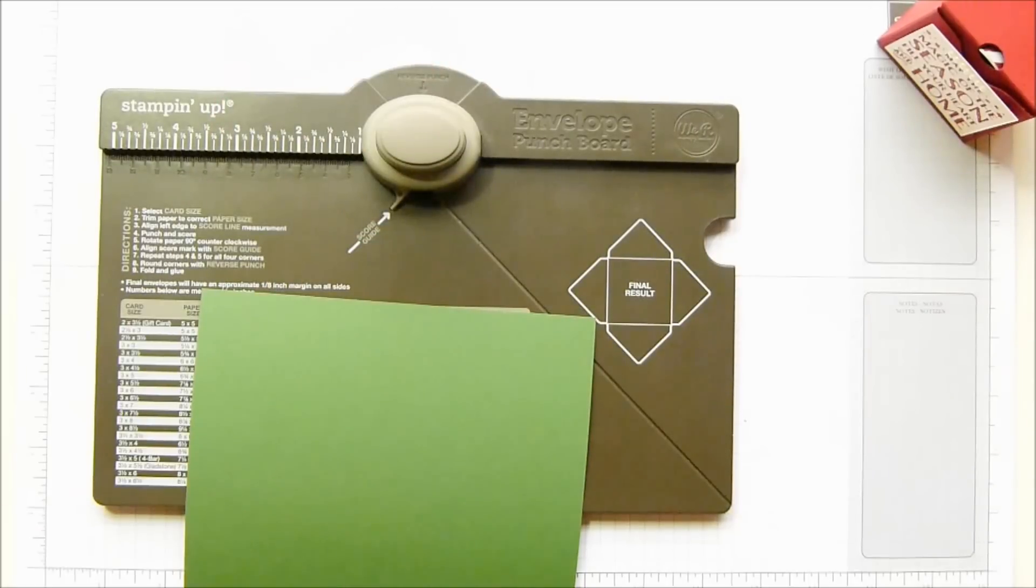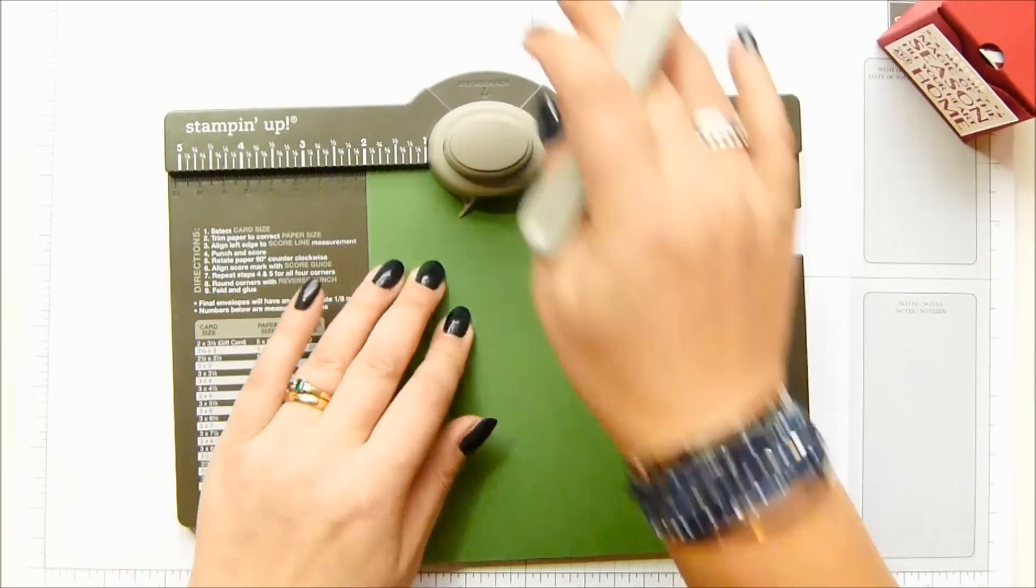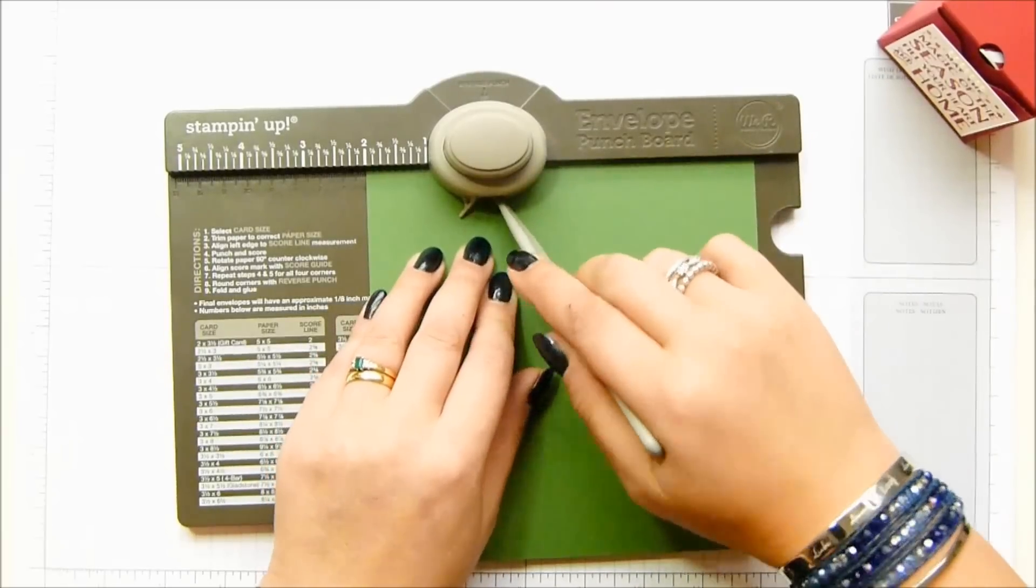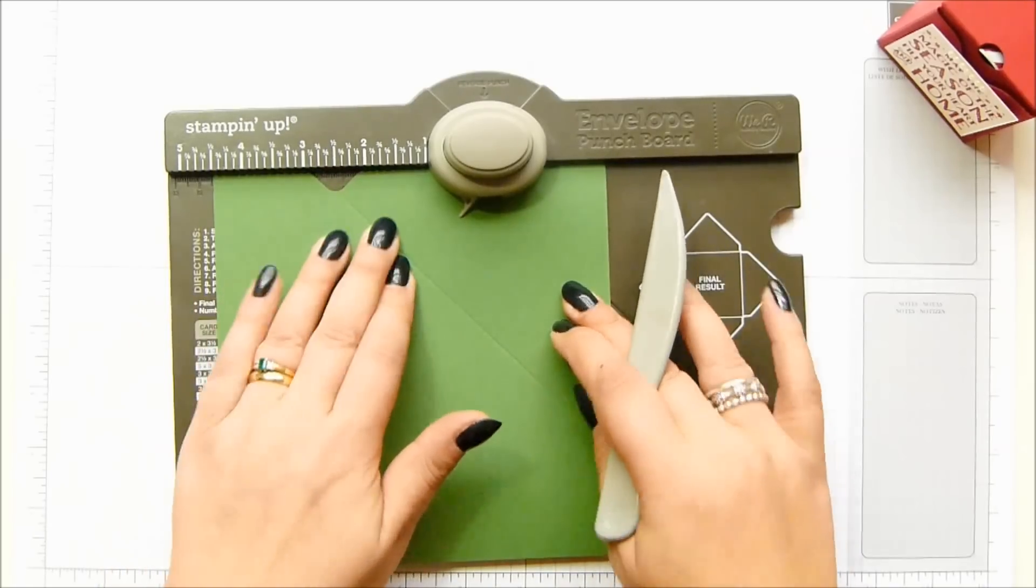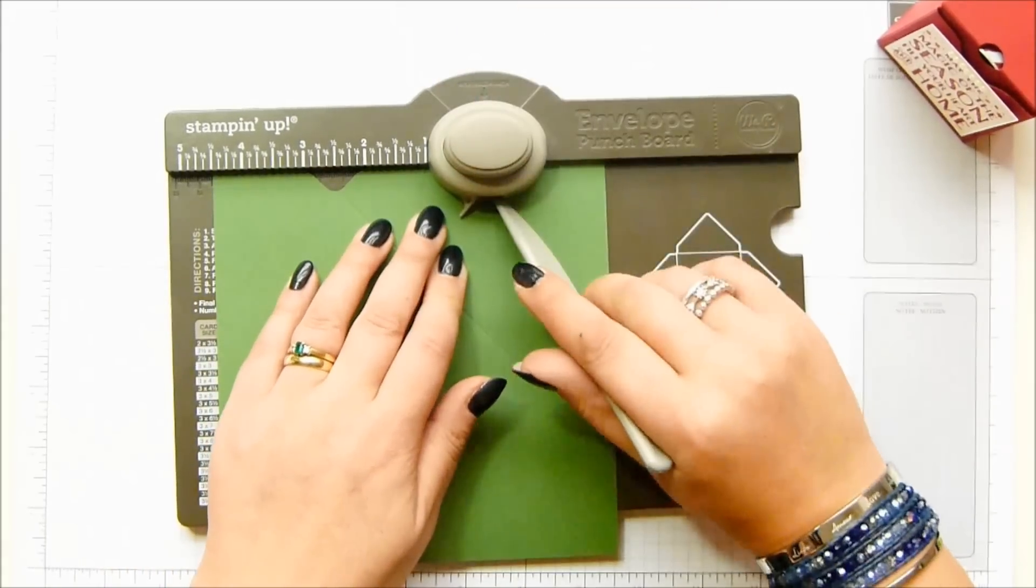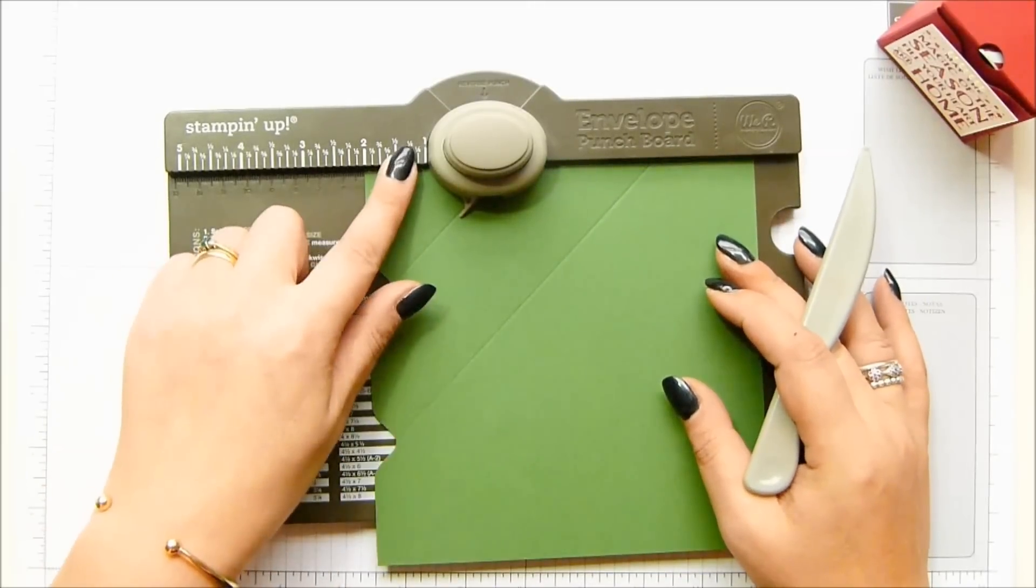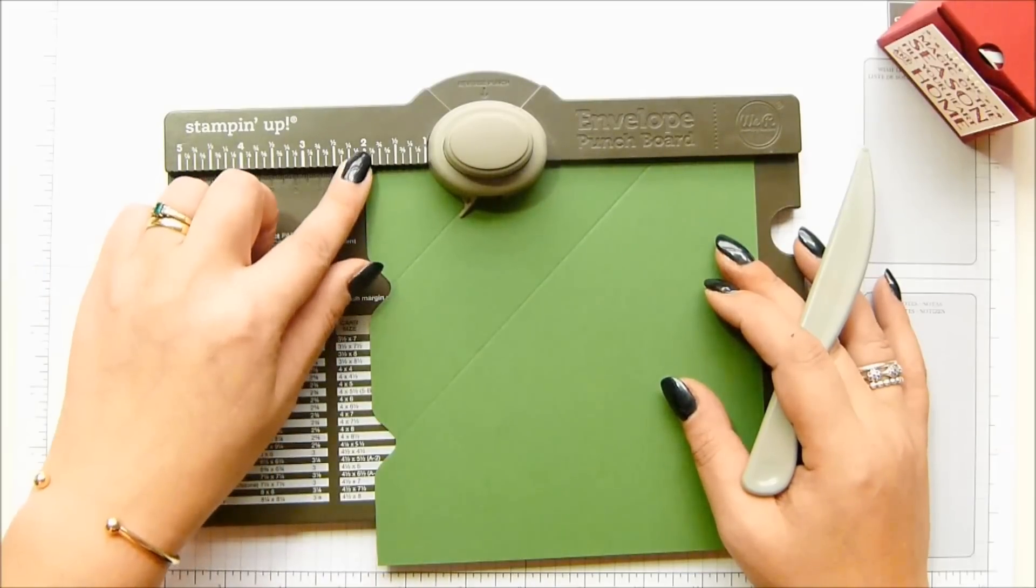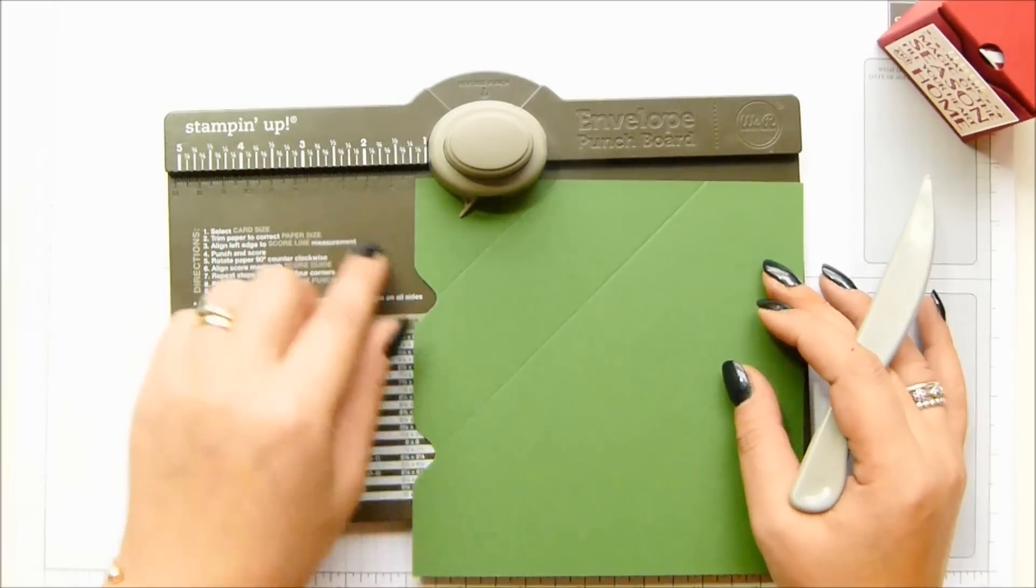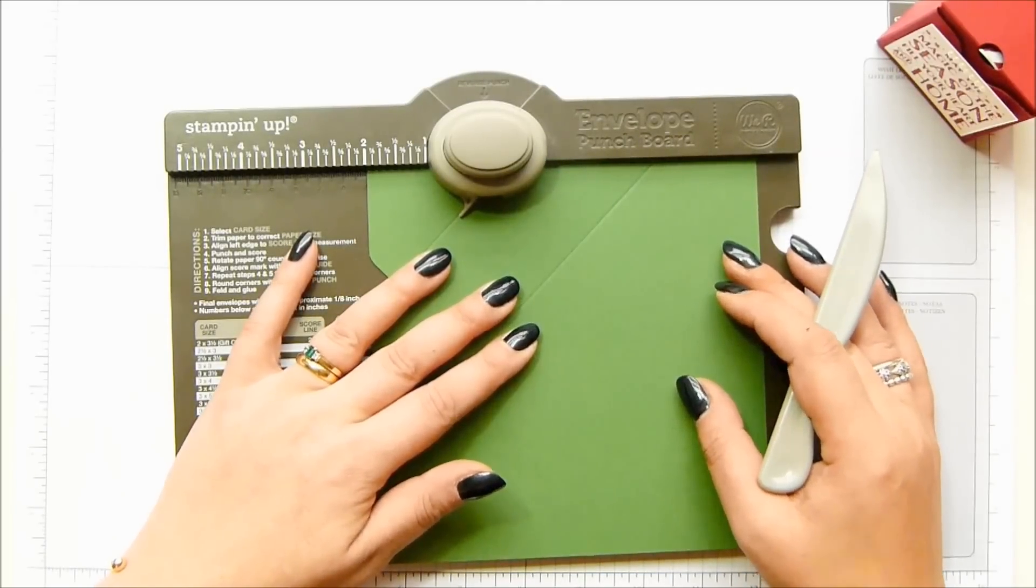Easy peasy. So the first scoring is going to come at two inches which is five centimeters and then you slide it along to four and a half inches which is eleven point four almost eleven point five. But if you've got a punch board you know that the dominant pattern across the top is inches and the centimeters is underneath.